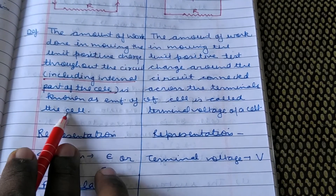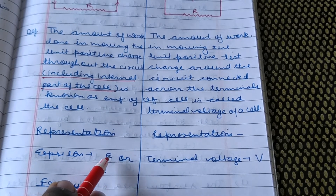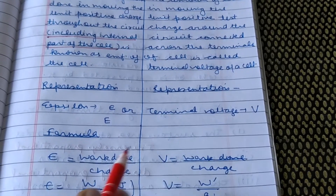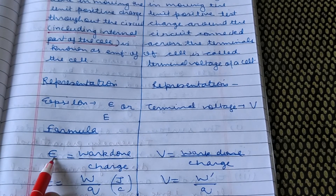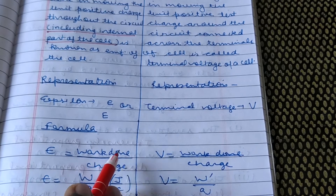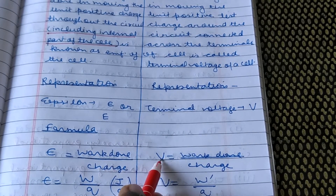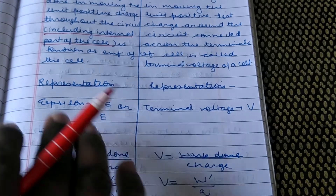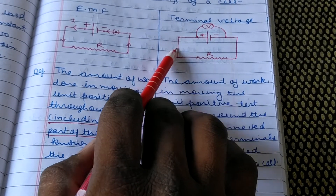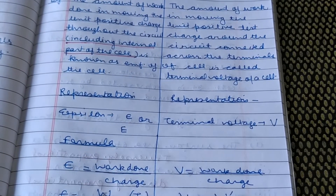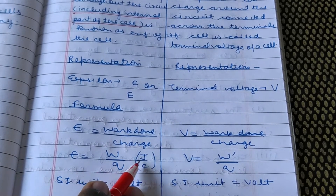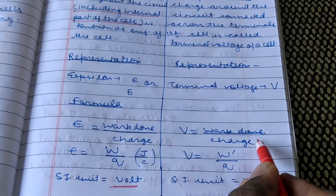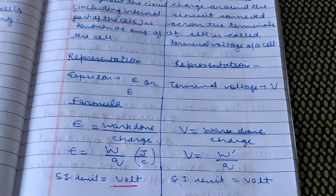The EMF of the cell is represented by epsilon (ε), written like a small letter E, while terminal voltage is represented by capital V. According to the definition, epsilon equals work done in moving the charge throughout the circuit, while terminal potential difference is work done in moving the charge between two points in the circuit. The formula for both is work done divided by charge, with unit joule per coulomb, or volt. The SI unit of both EMF and terminal voltage is volt.